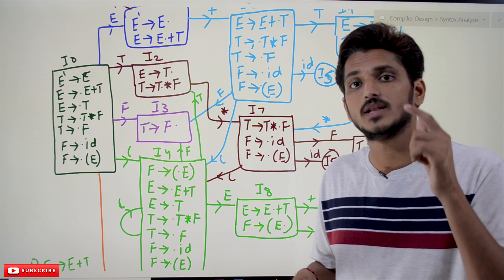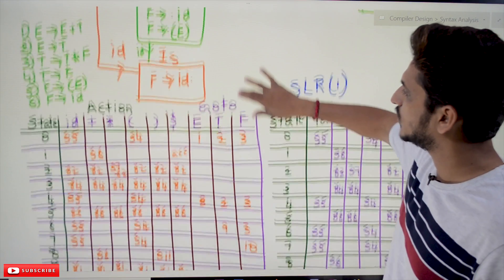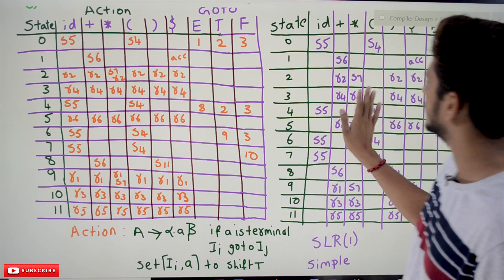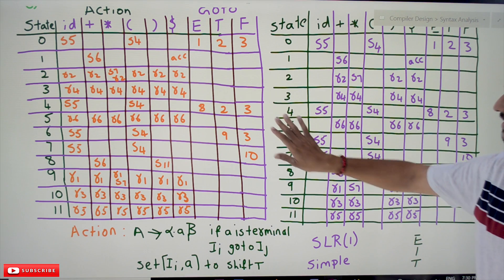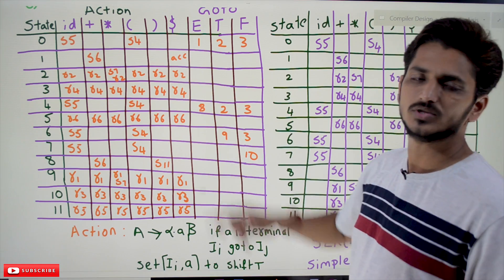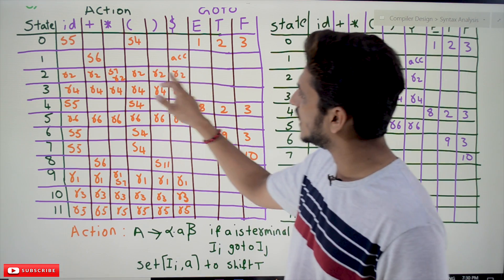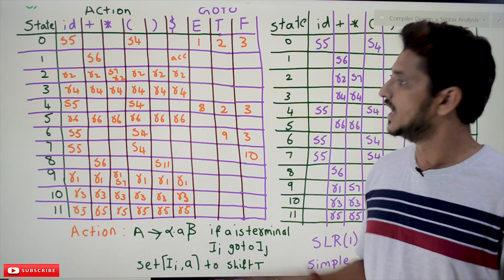This is LR(0) table construction, and this is SLR(1) table. In state 2 we need to do reduce action. That's why we have written R2, R2, R2 on all the terminal symbols in LR(0).